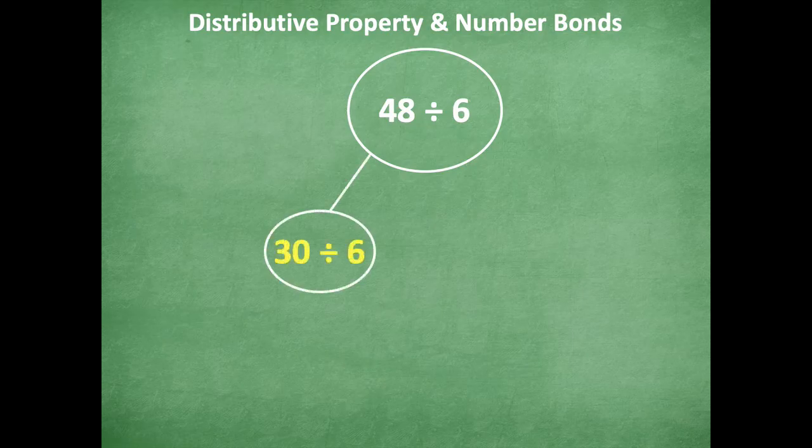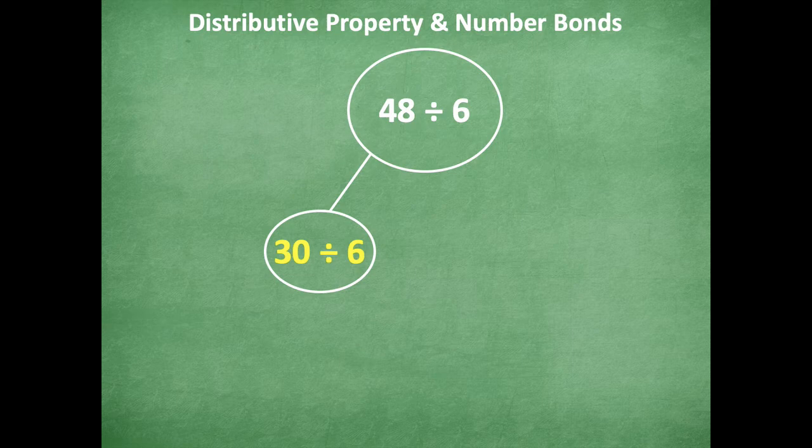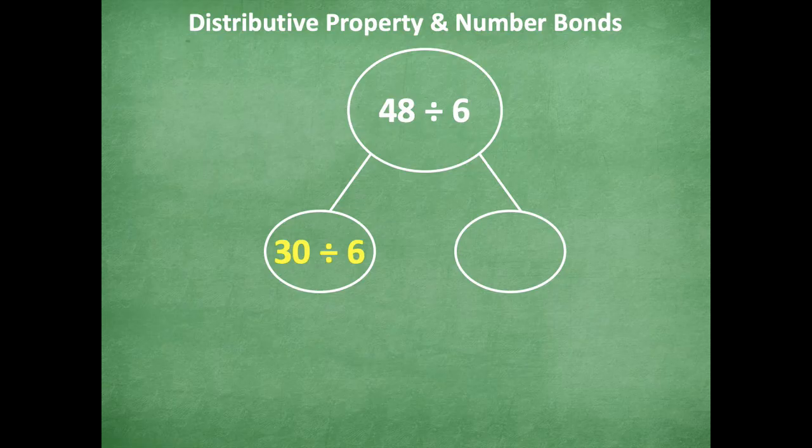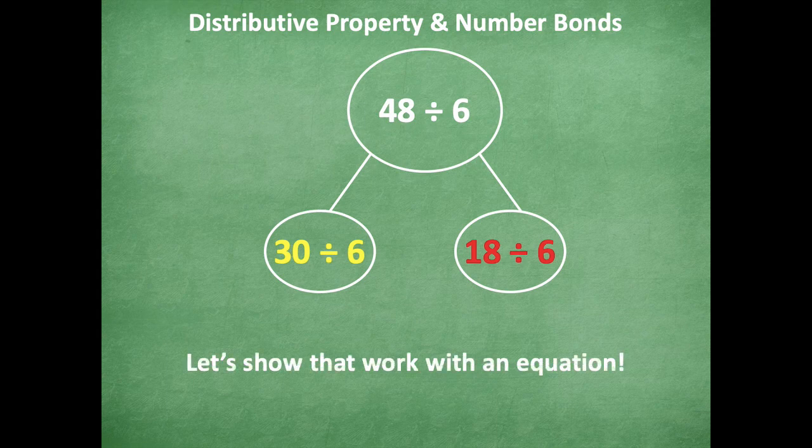So let's see how we could do this. So we have our number bond of 48 ÷ 6. Our first leg on our number bond is going to be 30 ÷ 6. And then our second one. This could get a little trickier to think about how to be able to solve this. But the way that I like to think about it is I have 48. If I take away 30, I'm left with 18. And we're going to keep divided by six for all of these. So 18 ÷ 6 is going to be our other one. Okay, so that's our other part of our number bond. So notice how 30 + 18 make 48, which is in our total for our number bond.